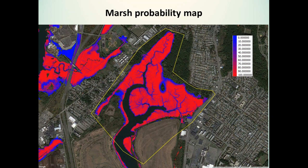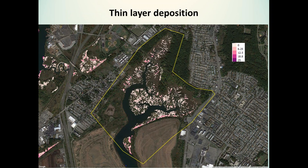The thin layer deposition effect was difficult to show in one picture, so I made a different image for it. This picture shows how much the probability of being a marsh in 2085 is boosted by thin layer deposition on the existing marsh system. The more purple the area, the more boost in probability you have. You can see there are areas that really benefit from these boosts. Overall, you can get a 6–7 percent higher probability of being a marsh in 2085 with this adaptation strategy.